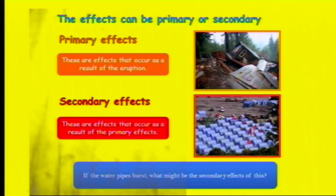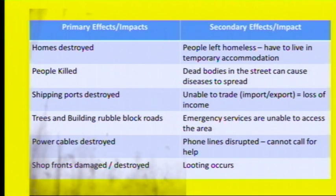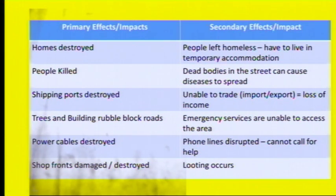The effects of an earthquake can be either primary or secondary. Primary effects are things that happen straight away as a result of the earthquake, and secondary effects are things that happen because of the primary effects. For example, homes are destroyed (primary) — the secondary impact is that people are homeless and have to live in temporary accommodation. People are killed and dead bodies cause diseases to spread. Shipping ports might be destroyed, leading to a loss of trade and income. Trees and buildings might block roads, preventing emergency service access. Power cables are destroyed so phone lines fail. Shop fronts might be damaged, which can lead to looting.